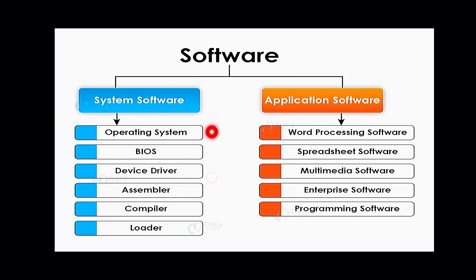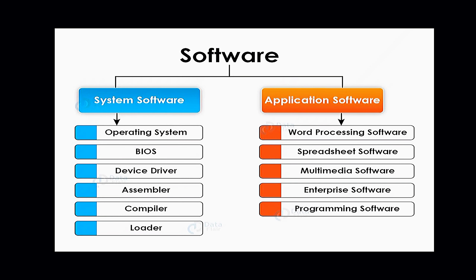We will discuss the topic in detail. Application software includes word processing software, spreadsheet software, multimedia software, interface software and programming software. System software handles hardware components, which are mandatory for hardware maintenance and control. Application software is general-purpose software that you can install on any computer.